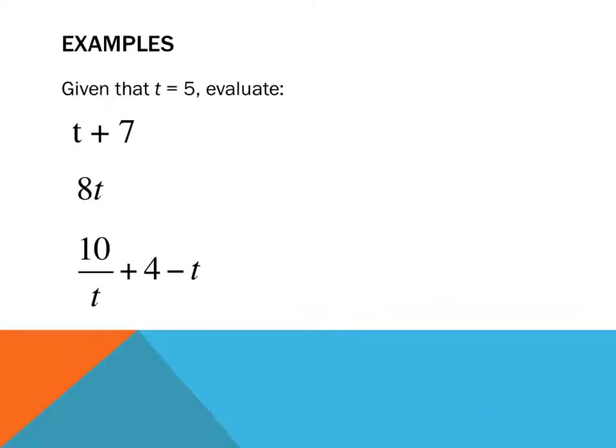Given that t equals 5, evaluate the following. Now, I'll give them some a's and b's. Let's look at this first example. Given that t equals 5, t plus 7, so it's going to be 5 plus 7. 5 plus 7 equals 12. Your working out will go down the page.